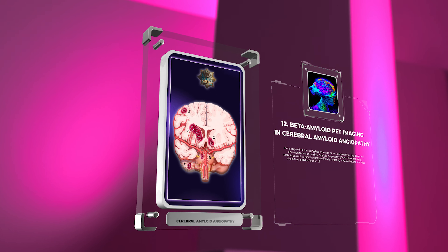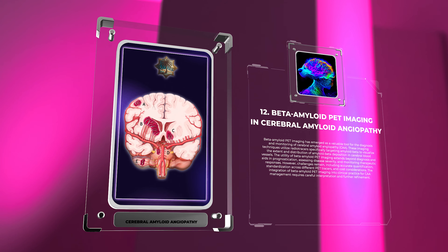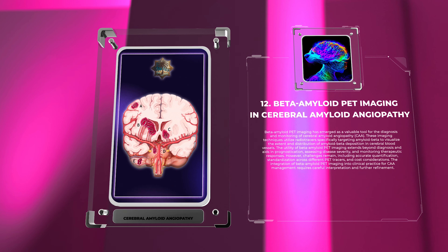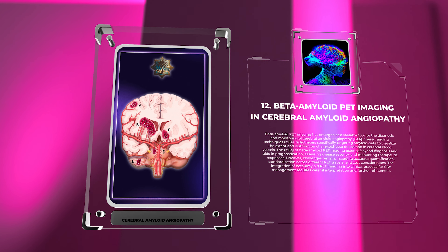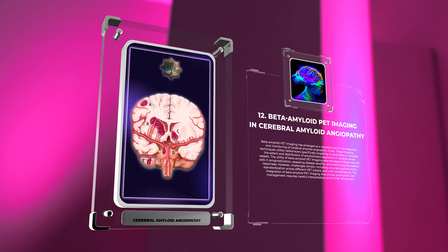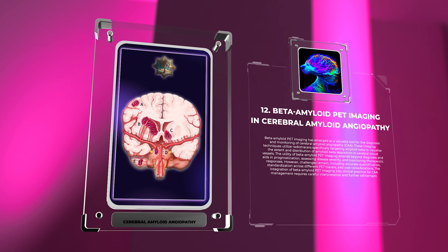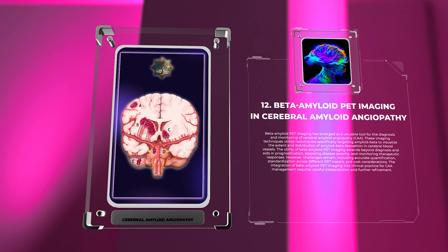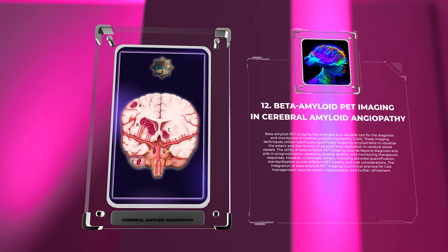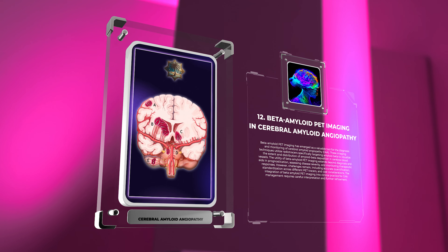Beta amyloid PET imaging has emerged as a valuable tool for the diagnosis and monitoring of cerebral amyloid angiopathy, CAA. These imaging techniques utilize radiotracers specifically targeting amyloid beta to visualize the extent and distribution of amyloid beta deposition in cerebral blood vessels. The utility extends beyond diagnosis, aiding in prognostication, assessing disease severity, and monitoring therapeutic responses. However, challenges remain, including accurate quantification, standardization across different PET tracers, and cost considerations. The integration of beta amyloid PET imaging into clinical practice requires careful interpretation and further refinement.